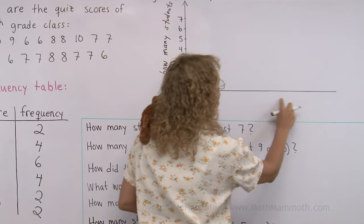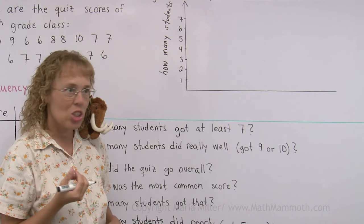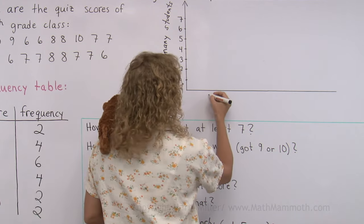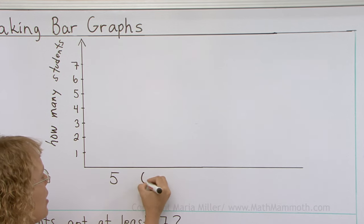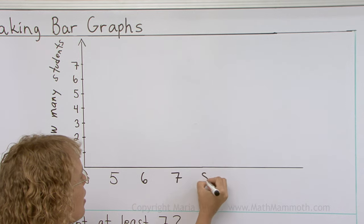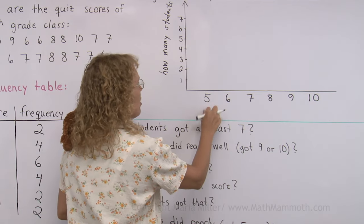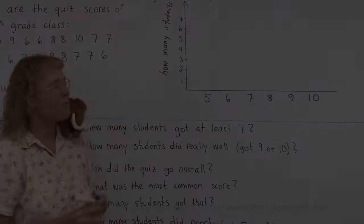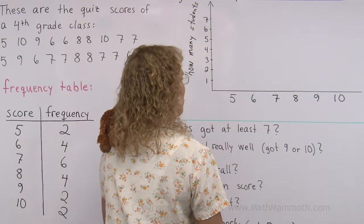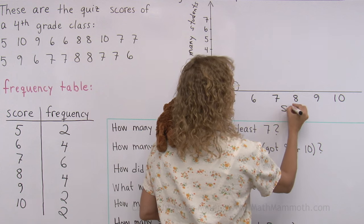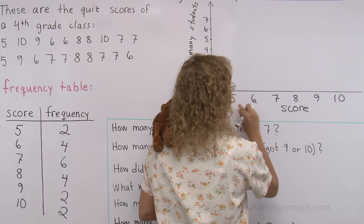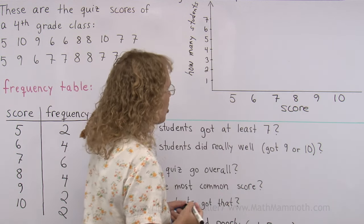And over here go the possible quiz scores such as we were starting with five, six, seven, eight, nine, and ten. For each of these I will then draw a bar or a rectangle. And let me add one more thing which is score. These are the possible quiz scores.